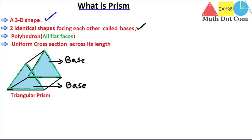The third property — polyhedron with all flat faces. It is clear from this diagram that there is no curve; the two triangles and the other rectangular faces are all flat. The fourth property — uniform cross-section across its length. If we take the cross-sectional view of this shape from any place, we will get the same triangle. So all four properties are met and this shape is confirmed as a prism.